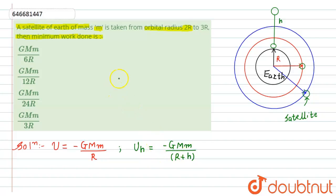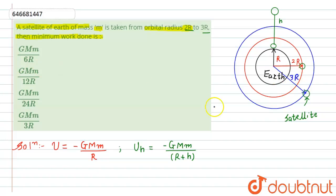According to the question, we are changing the orbit from twice R to thrice R. So let's suppose this satellite is initially revolving in an orbit of radius 2R, and we move it to an orbit of radius 3R. We can now write the initial potential energy of the satellite.